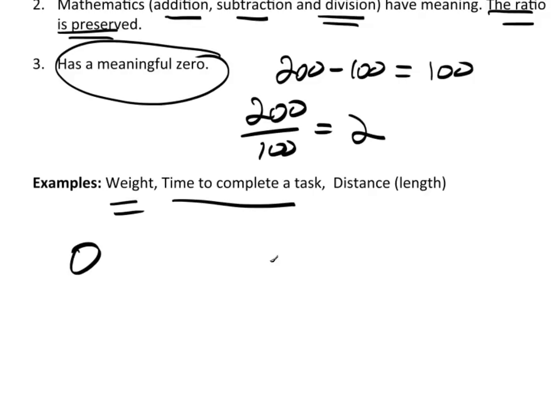And then, somebody turns theirs in, say, 10 minutes later. So, 10 minutes later, I have a quiz turned in. And then, 20 minutes later, 20 minutes after the start, somebody else turns in their quiz. Well, see, there's a natural zero here.